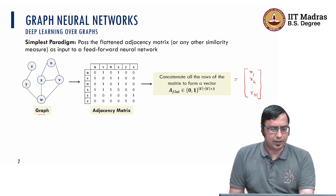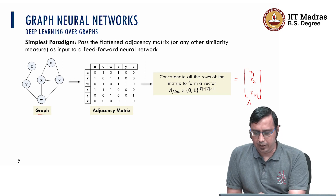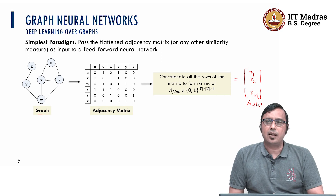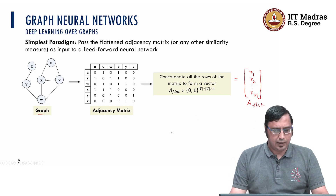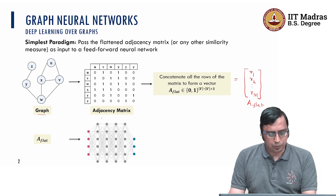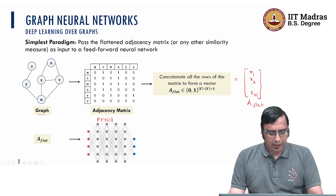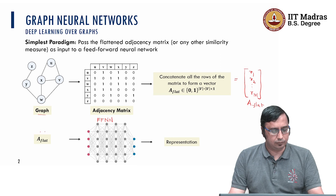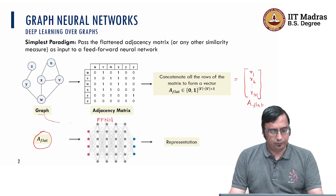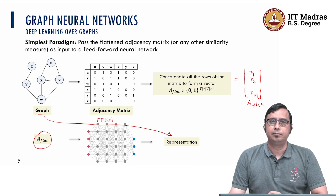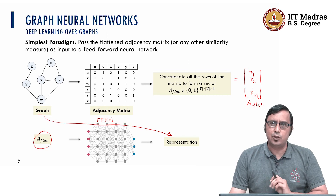As we can see, the elements of this particular vector A_flat are either 0 or 1. From our earlier studies, we know that I can use this vector for a particular graph, pass it through a feed-forward neural network, and get a representation of this particular A_flat matrix — that is, a representation for the graph. Now, there are certain issues with this particular representation. Let us look at what those issues are.